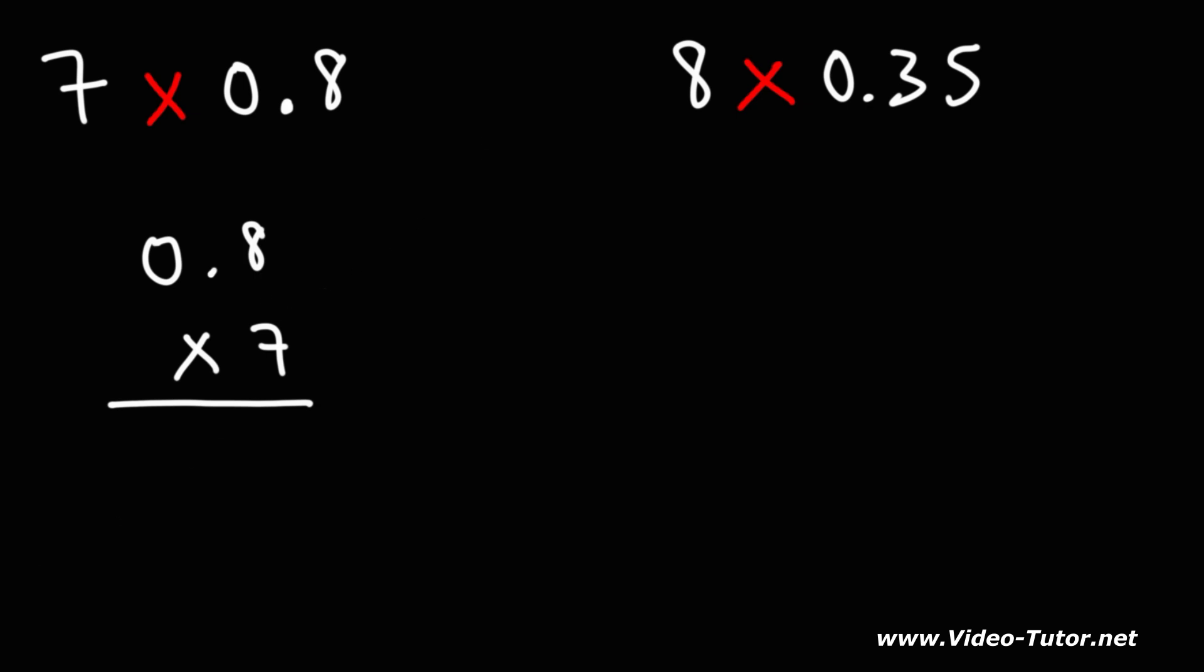8 times 7 is 56. We can write the 6, carry over the 5. 7 times 0 is 0 plus 5. We get 5.